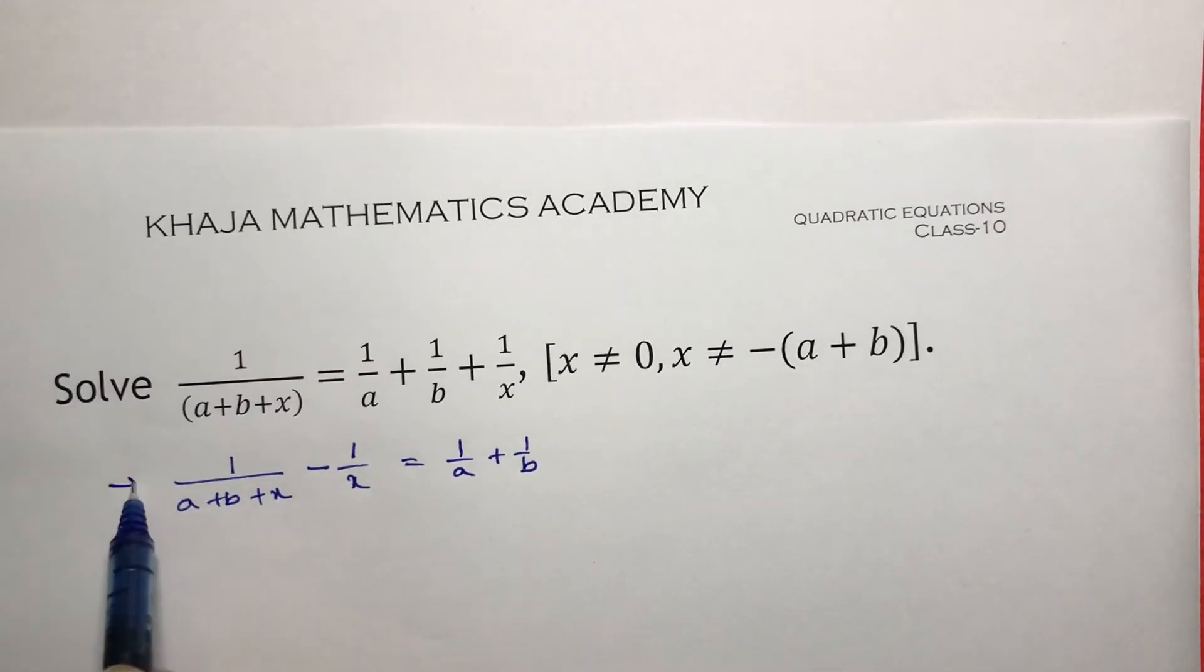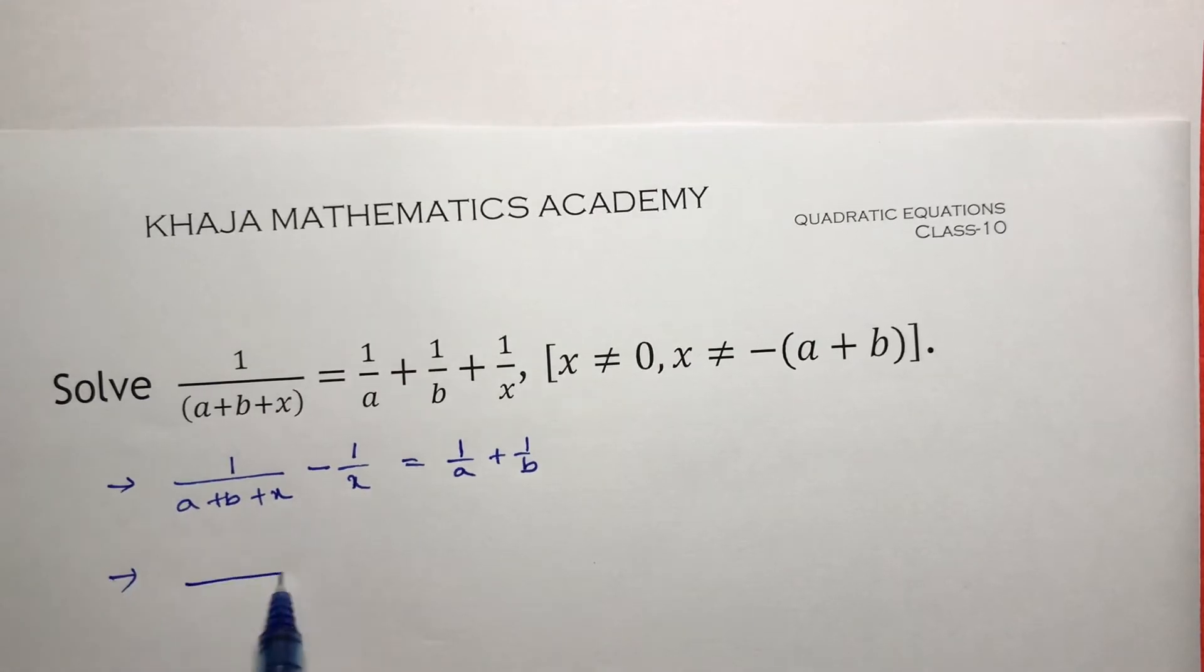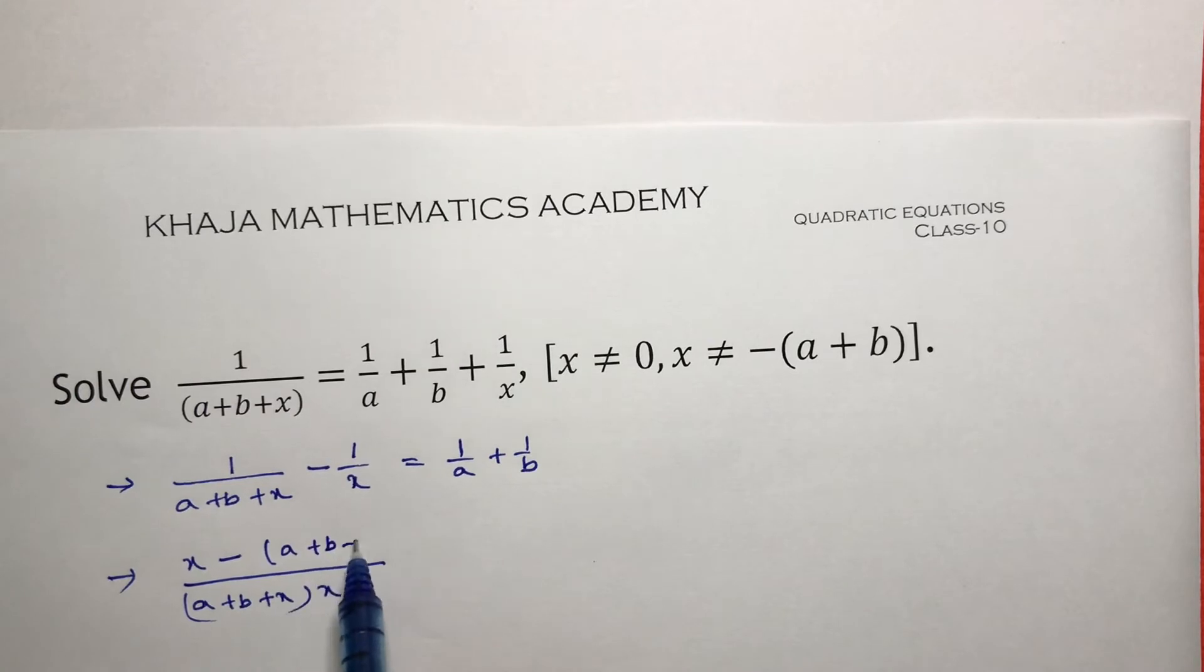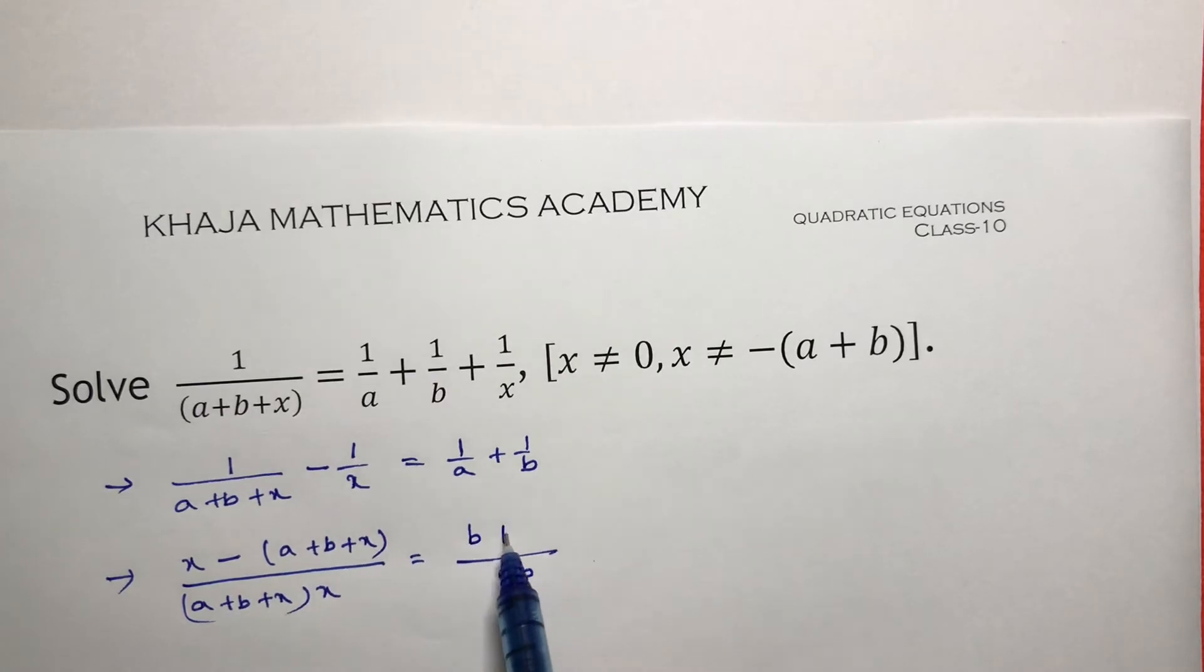Now in these two terms, if I take LCM a plus b plus x into x, so x minus of a plus b plus x equals here LCM is ab, so here I will get b plus a.